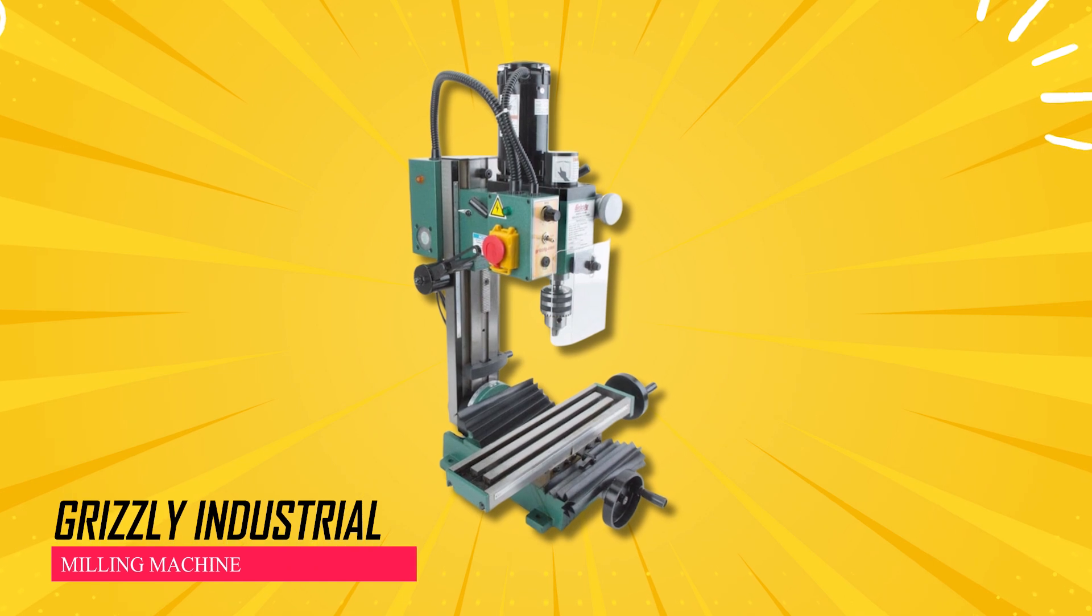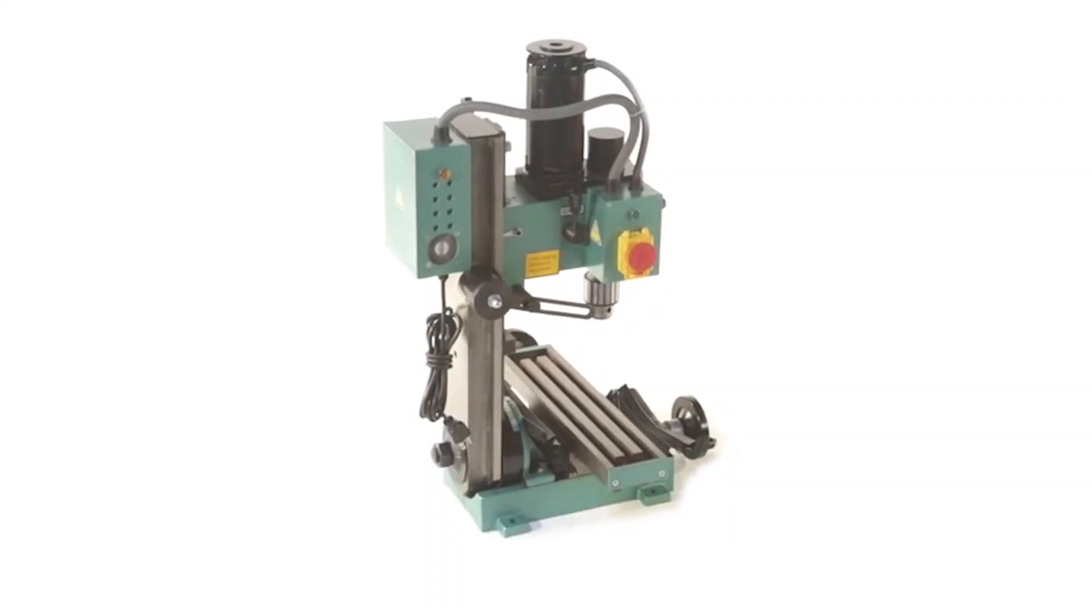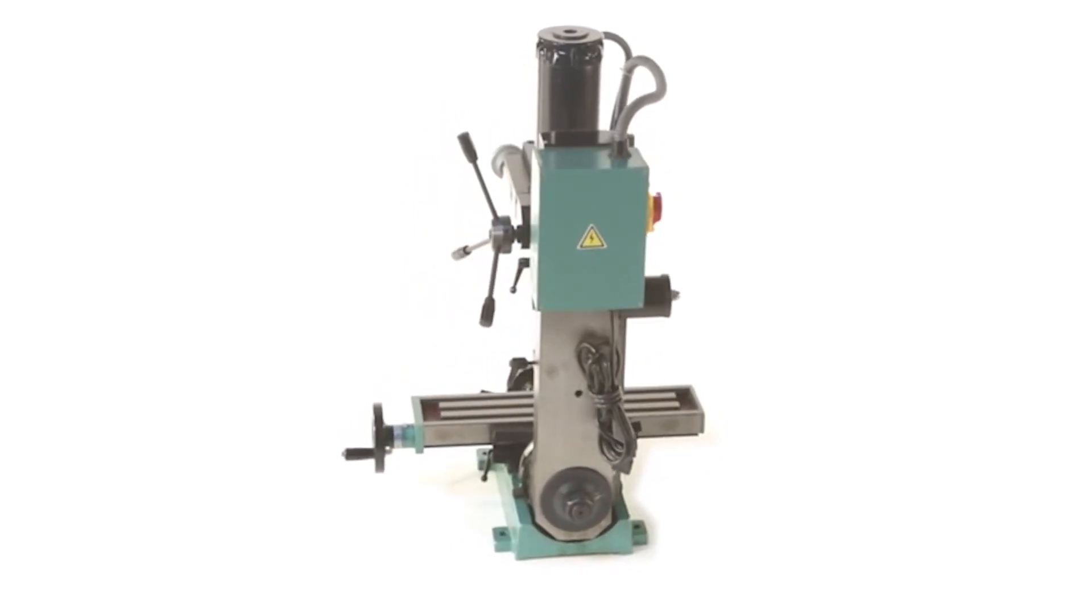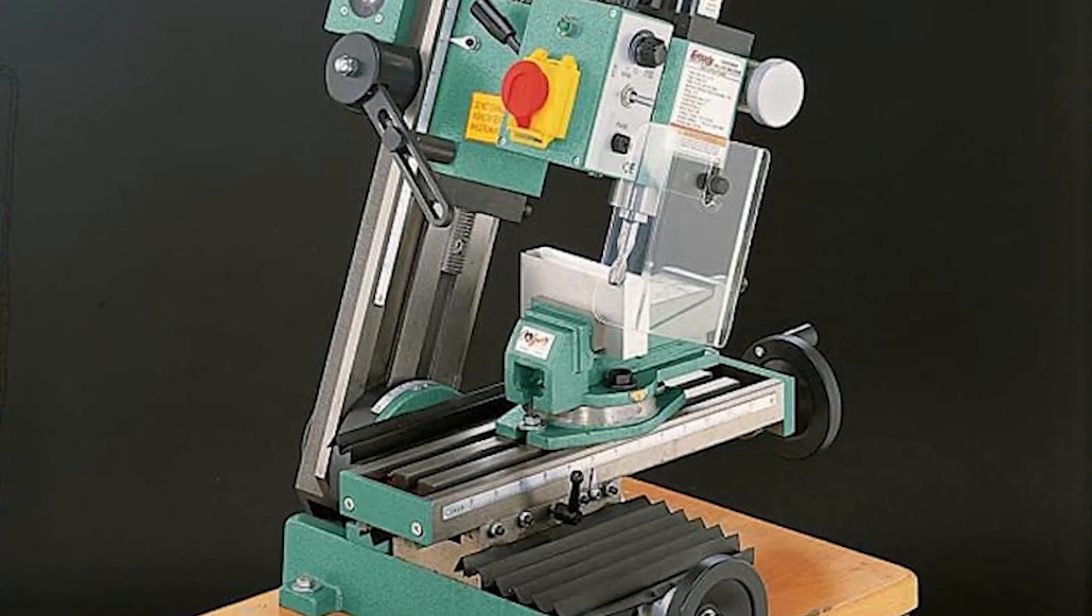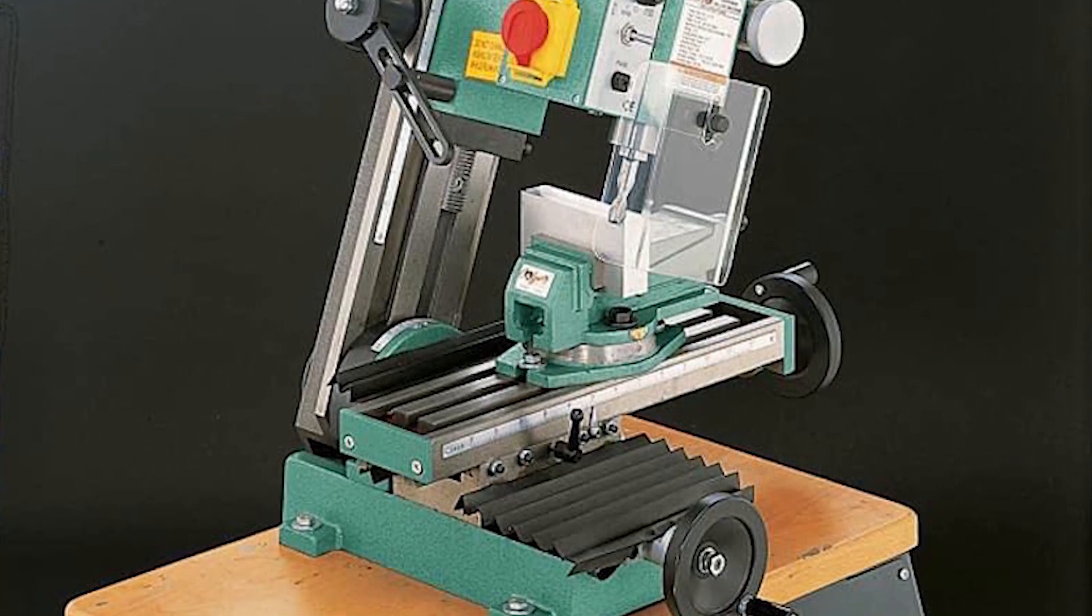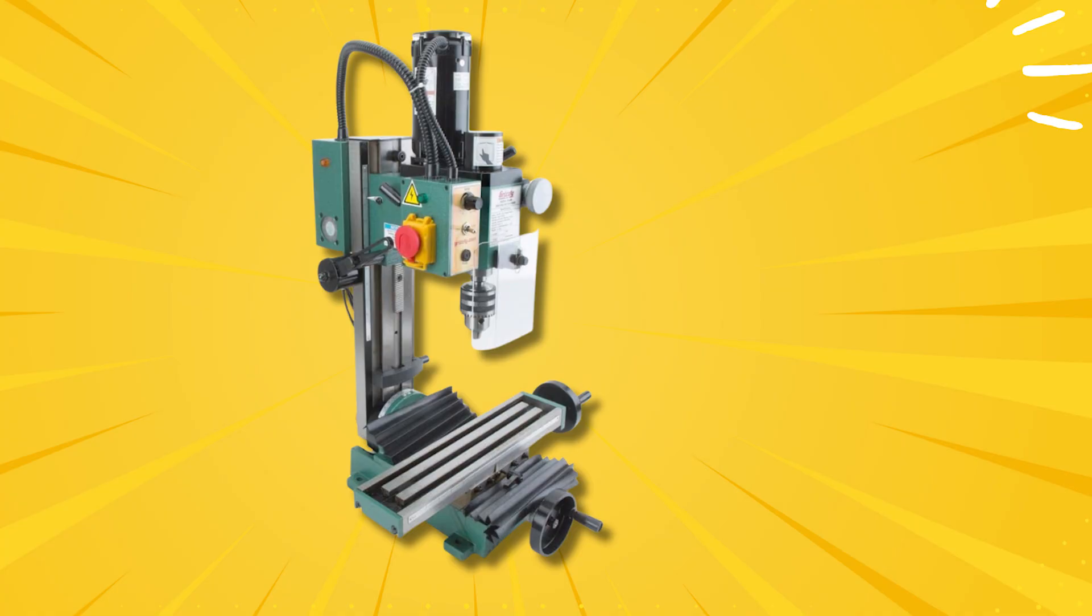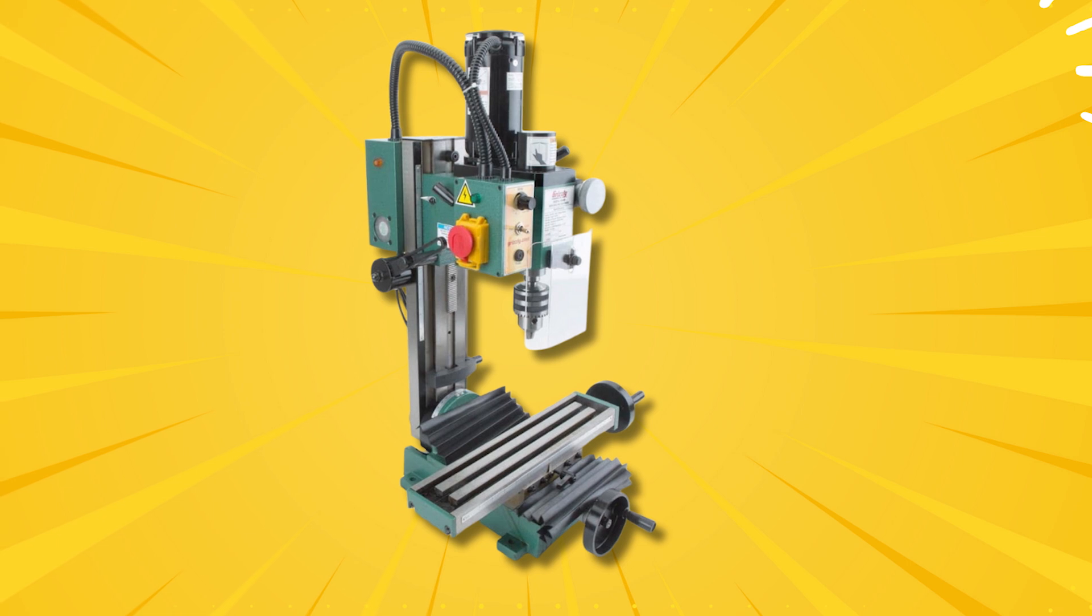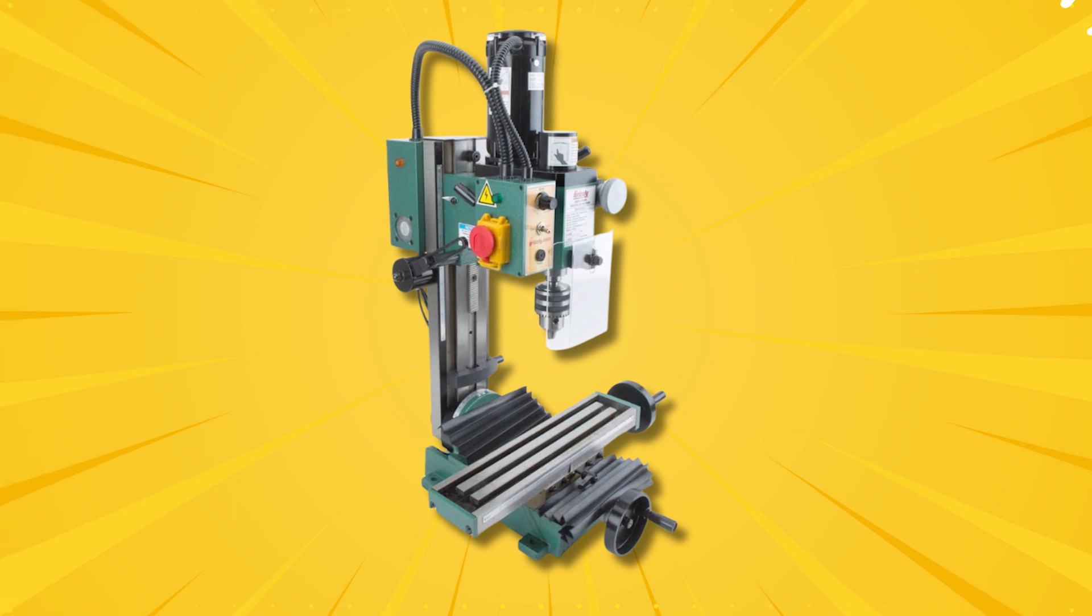Grizzly Industrial Milling Machine. Introducing a mini milling machine packed with more features than some mill drills, yet it remains affordable for everyone. This compact powerhouse is capable of handling various tasks effortlessly. What sets it apart is the absence of belt changes. Thanks to the variable speed control and gear drive system, ultimately saving valuable time and minimizing hassle during operation.